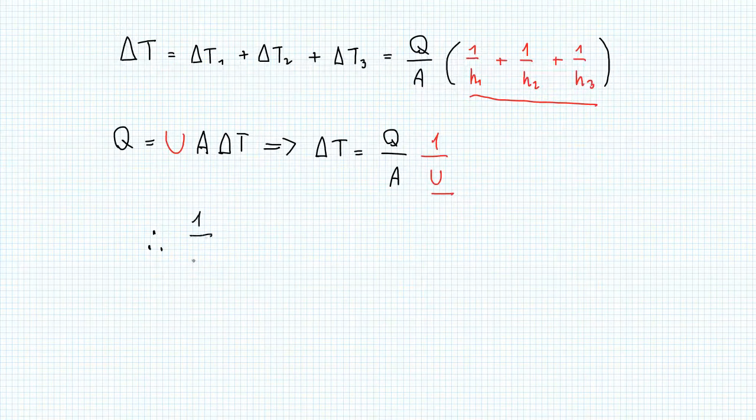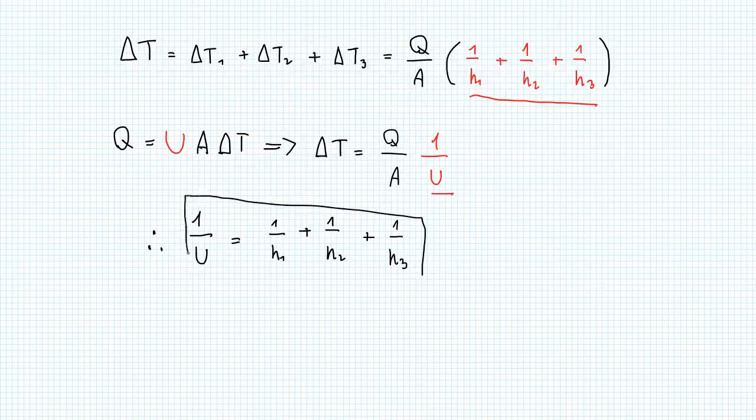So this shows that the resistances are additive. So if you calculate each resistance, H1, H2, and H3, or however many you have in your process, you can use them in this equation to find U.